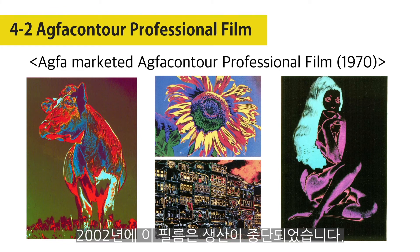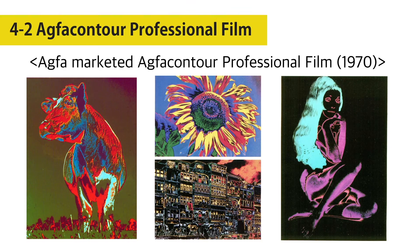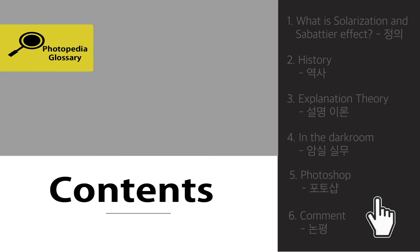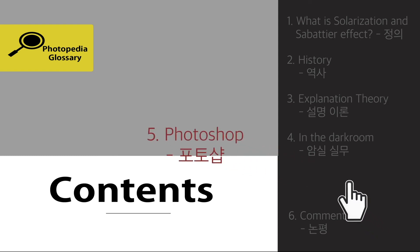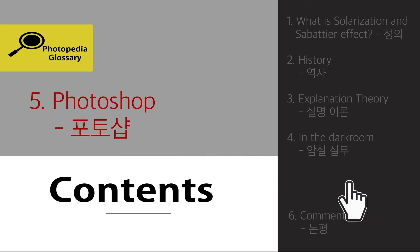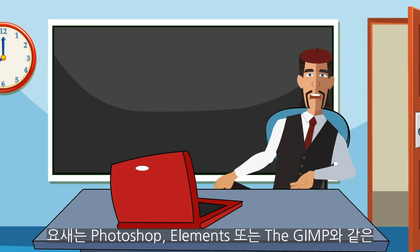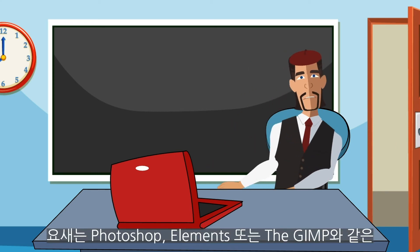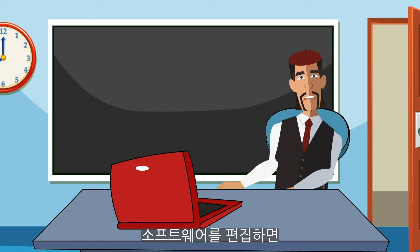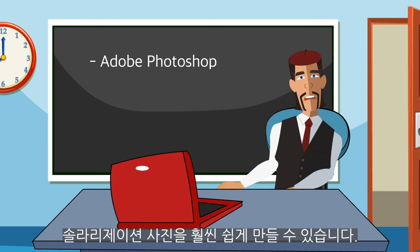As of 2002, AGFA Contour Film was no longer being produced. Today, achieving a solarization look is much easier through editing software such as Adobe Photoshop, Elements, or the GIMP.